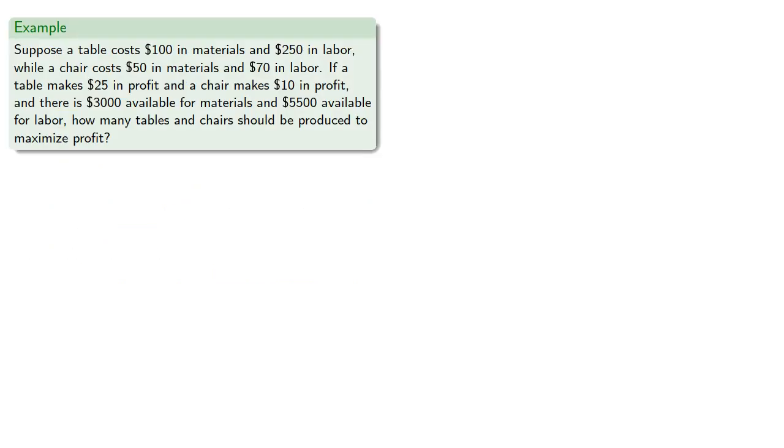For example, suppose a table costs $100 in materials and $250 in labor, while a chair costs $50 in materials and $70 in labor. If a table makes $25 in profit and a chair makes $10 in profit, and there's $3,000 available for materials and $5,500 available for labor, how many tables and chairs should be produced to maximize profit?